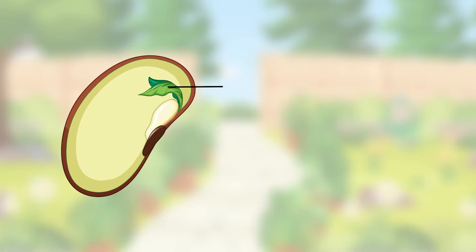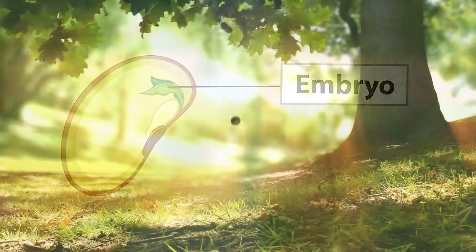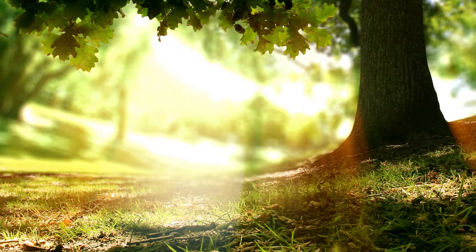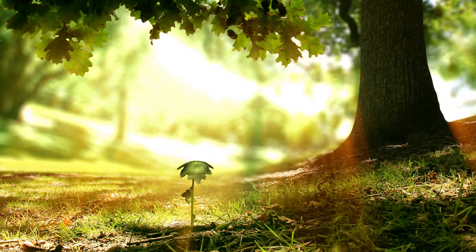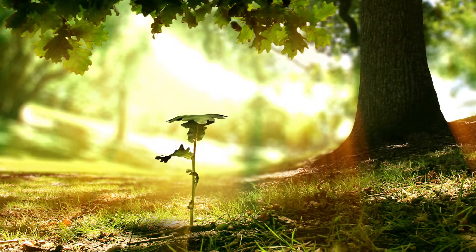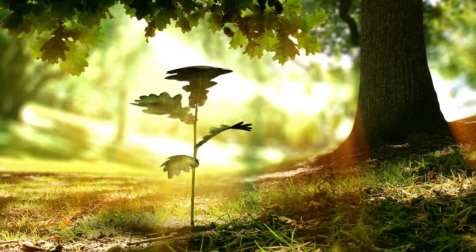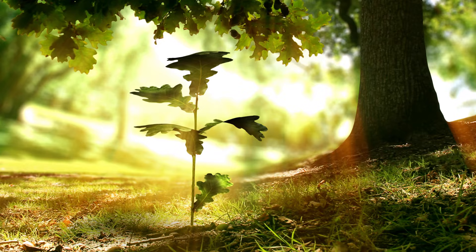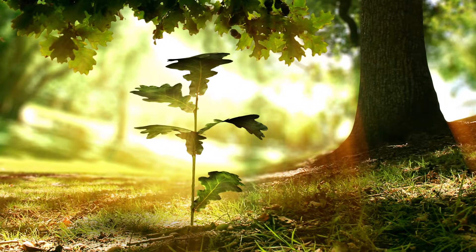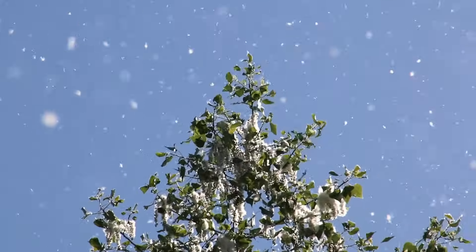Seeds contain tiny plant embryos, each holding the potential to give rise to a new plant. However, for a seed to fulfil its purpose, it must first find a suitable place to germinate and grow. This is where seed dispersal comes in.